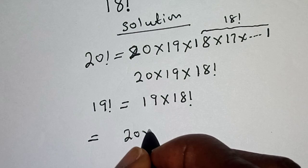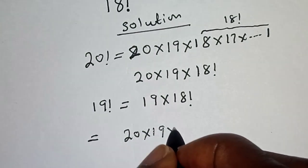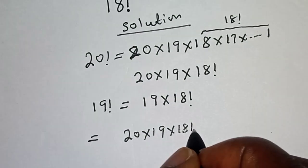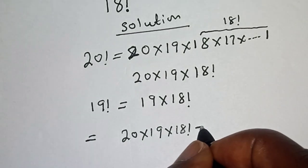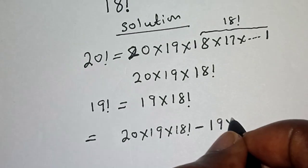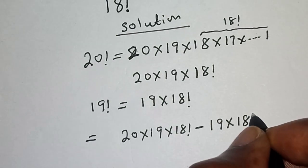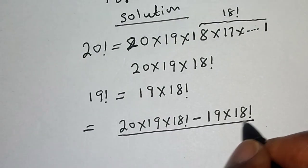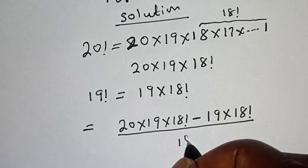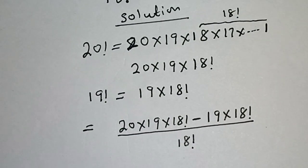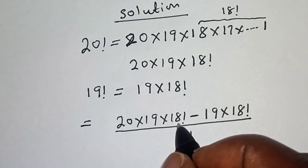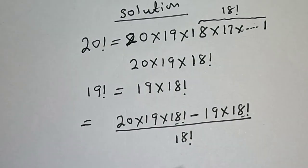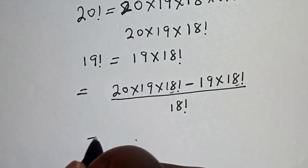We have 20 times 19 multiplied by 18 factorial minus 19 multiplied by 18 factorial, divided by 18 factorial. Then from the numerator, 18 factorial is common. Let's bring it out.